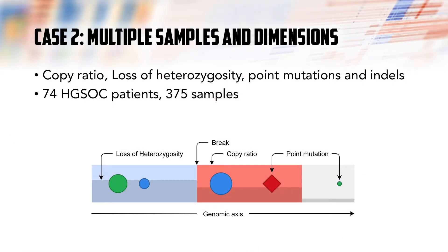The second case is about comparison of multiple samples and dimensions. The data consists of 375 samples collected from 74 high-grade serous ovarian cancer patients at diagnostic, mid-treatment, and relapse phases of the disease. The figure displays the visualization design. The background color encodes the log-2 copy ratio, height of the rectangle encodes the loss of heterozygosity, and points display point mutations and indels. The point color encodes functional category, and the size encodes allele frequency.